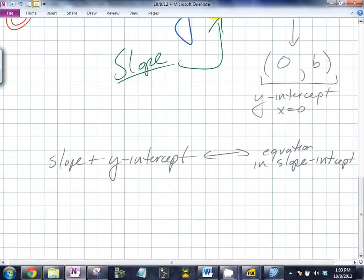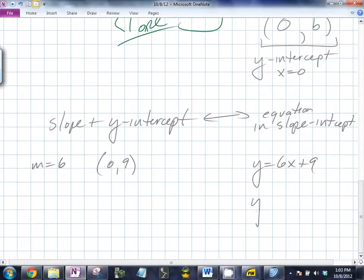So for example, let's say I said the slope was m equals 6 and the y-intercept was 0, 9. Can someone tell me what the equation would be? What is it? Y equals 6x plus 9. Exactly. So let's say I had y equals 2x minus 4. Can someone tell me the slope? Yeah, what is it? 2.